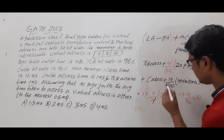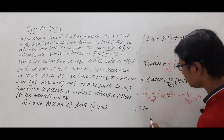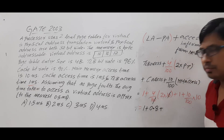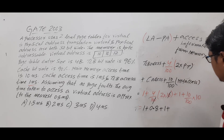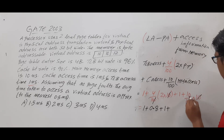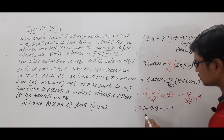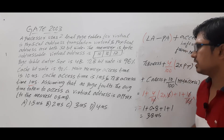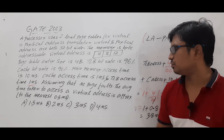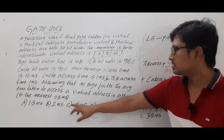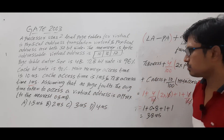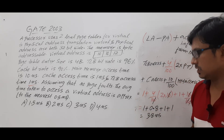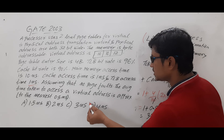Simplifying: (4/100) × 20 = 0.8, and (10/100) × 10 = 1. So the total is 1 + 0.8 + 1 + 1 = 3.8 nanoseconds on average to access a virtual address. Since the question asks for the nearest 0.5 nanoseconds, 3.8 is closer to 4 than to 3.5, so the answer rounds to 4 nanoseconds. The correct answer is option D.